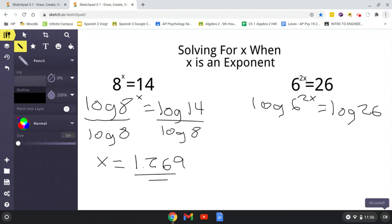Obviously, you want to get the variable by itself. So you're going to divide both sides by log of 6. Now you're going to have 2x equals log of 26 divided by log of 6. Let me do that on my calculator. 2x equals 1.818.